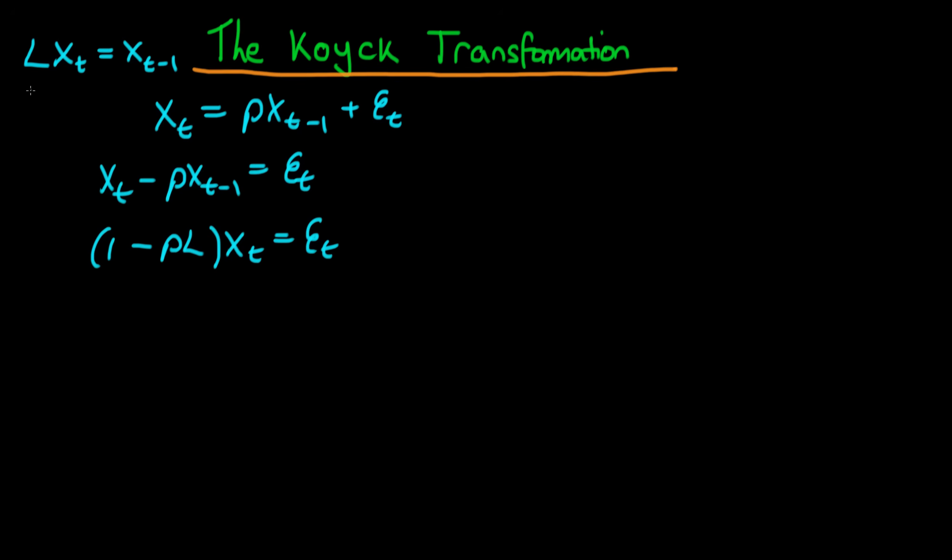And if I was to look at the lag operator squared, that essentially would be just applying the lag operator twice, so that would just be equal to Xt minus 2 when it's applied to Xt. So that's how the lag operator works, and it turns out that we can actually treat this lag operator just like it's some algebraic value, even though it's actually an operator. It turns out we're allowed to do that.